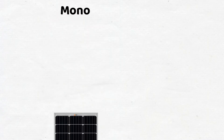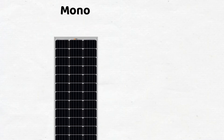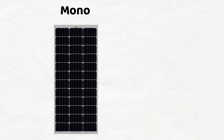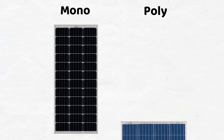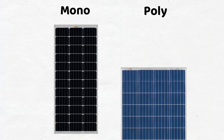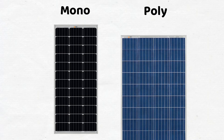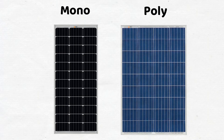We can see that the monocrystalline panels are dark blue and have a round edge. This is part of the production process. Poly panels have a square shape edge and are mostly light blue. The color can be a factor for you if you want your panels to look nice or blend in better.